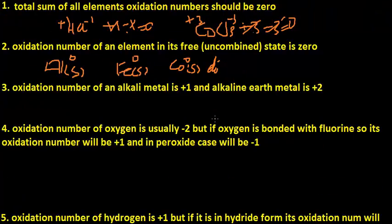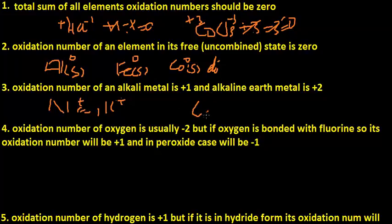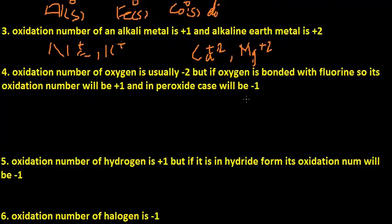Rule number three: the oxidation number of an alkali metal is plus one and an alkaline earth metal is plus two. Alkali metals are the Group 1A family — sodium, potassium, etc. — and they all have a plus one oxidation number. Alkaline earth metals like calcium and magnesium belong to the Group 2A family and always have a plus two oxidation number.